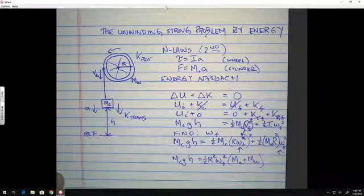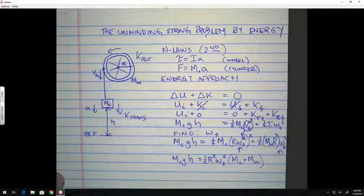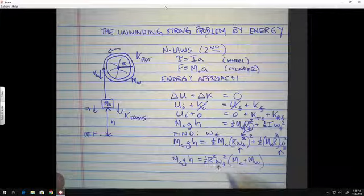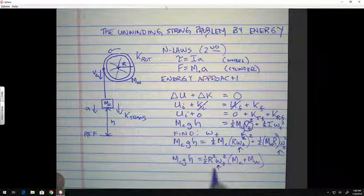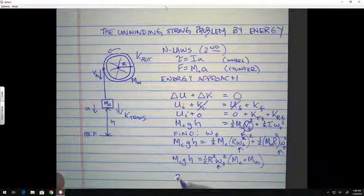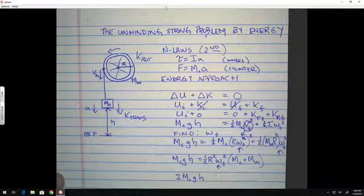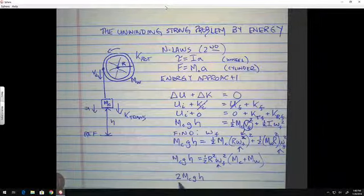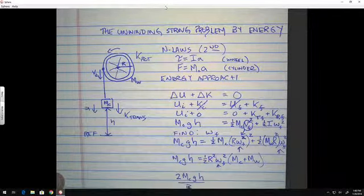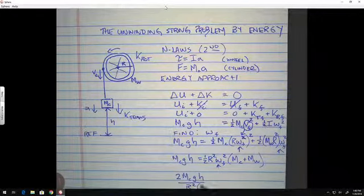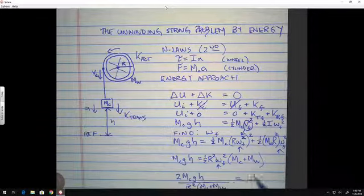And now we just have the almost trivial steps of just getting things on the other side and solving for what we want. And so, we're going to multiply both sides by two. So, it'll be two times the mass of the cylinder times g times h. We're going to divide both sides by r squared. And we're going to divide both sides by the sum mc plus m wheel. And that's equal to omega final squared.